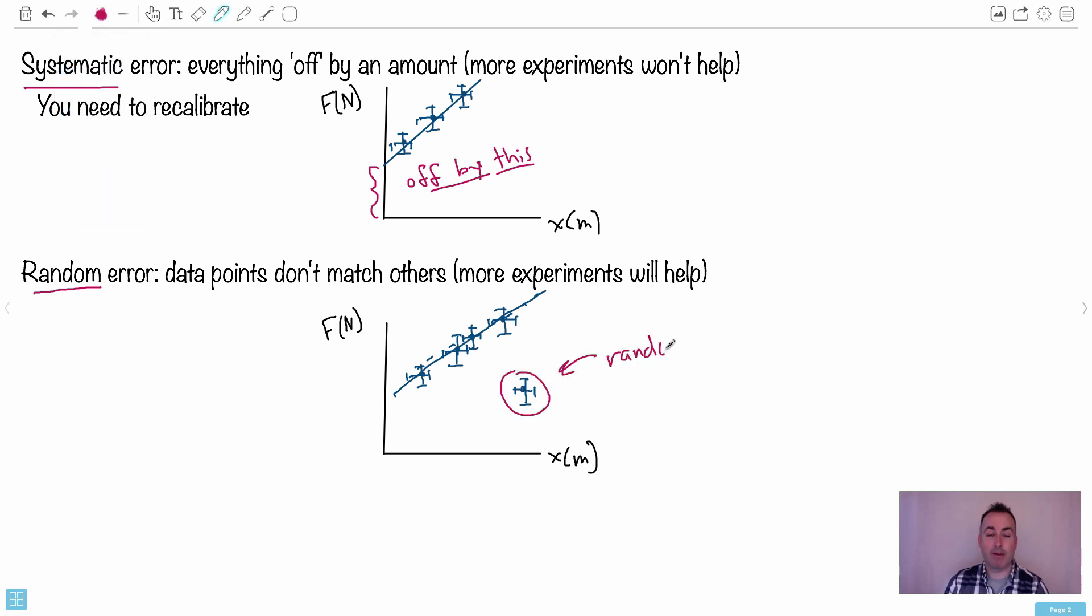That is your random error. That one right there is the one that's messing everything up. You probably made a mistake. Probably. Or just something weird happened. In this case, more experiments will help. You see that? Because if you do this, more experiments are going to help because you're going to reduce your random errors.